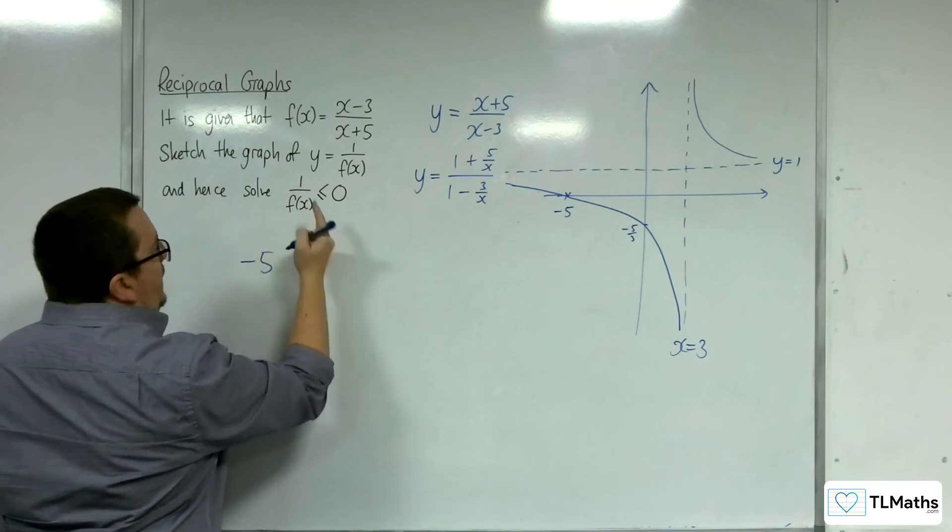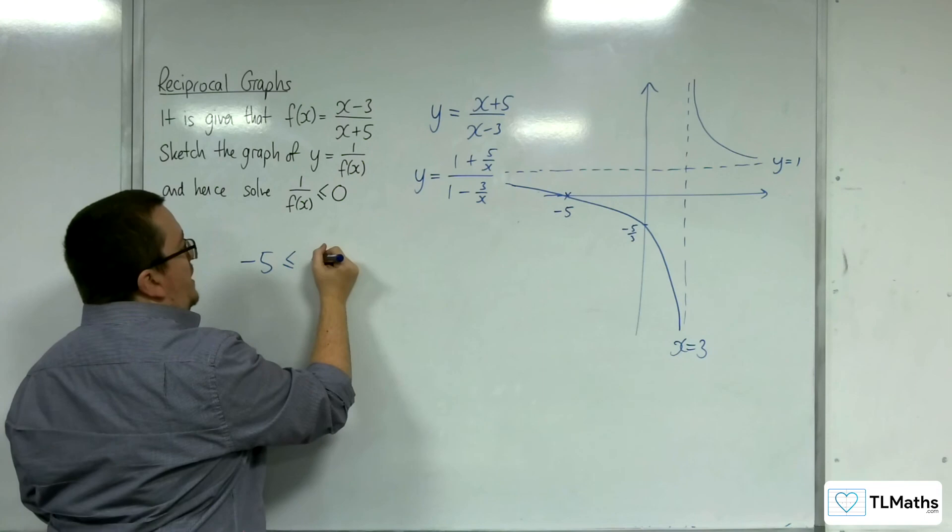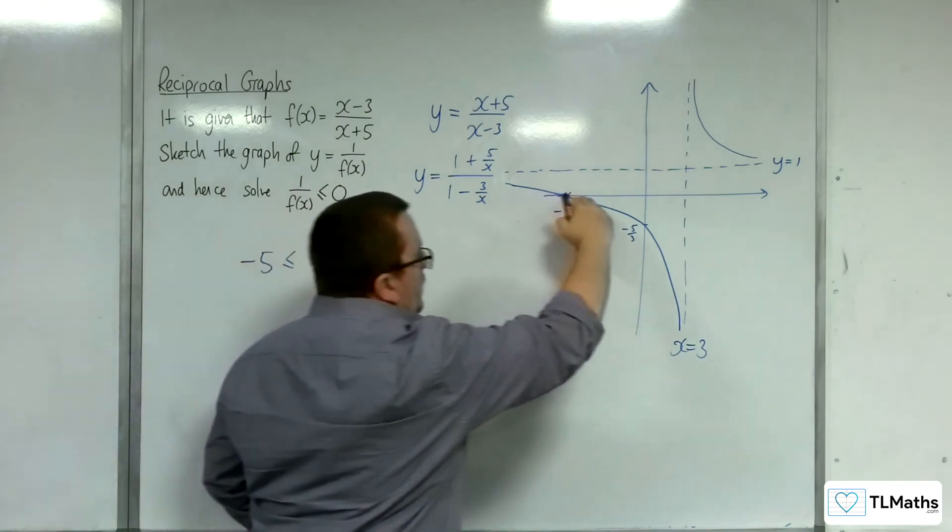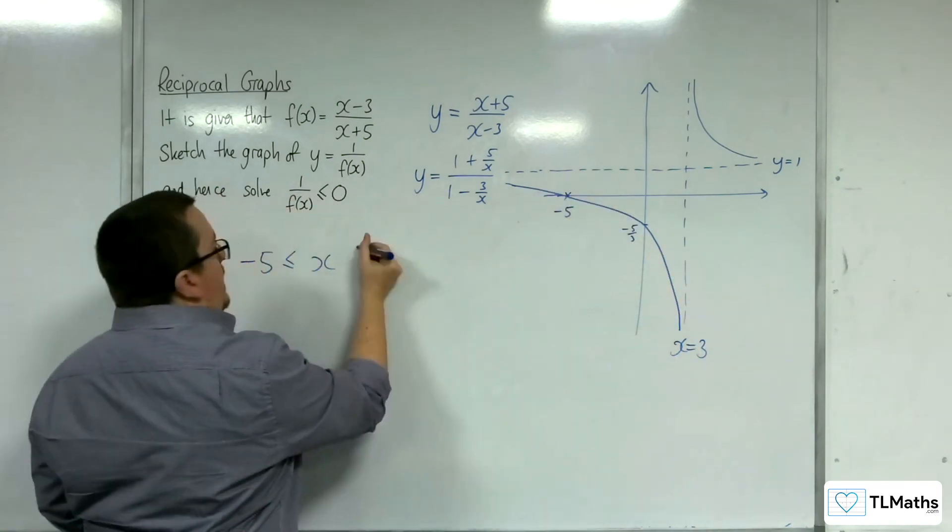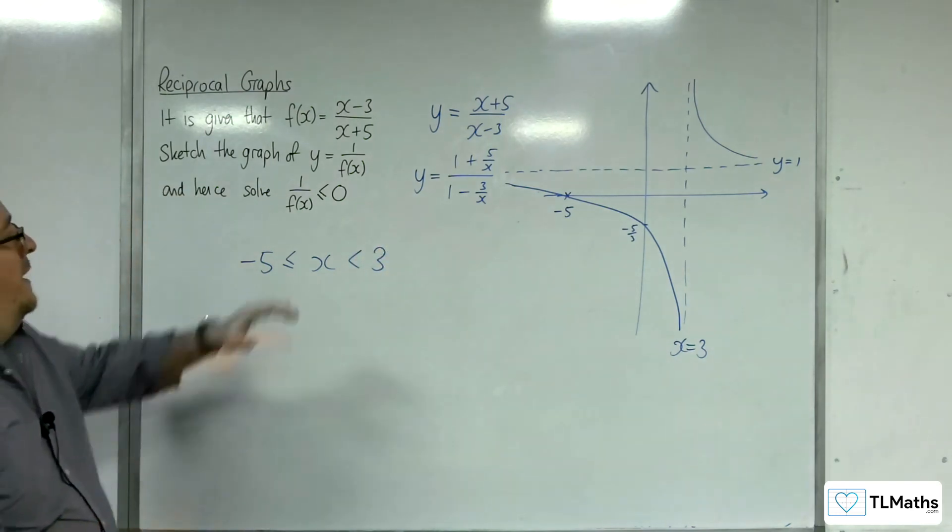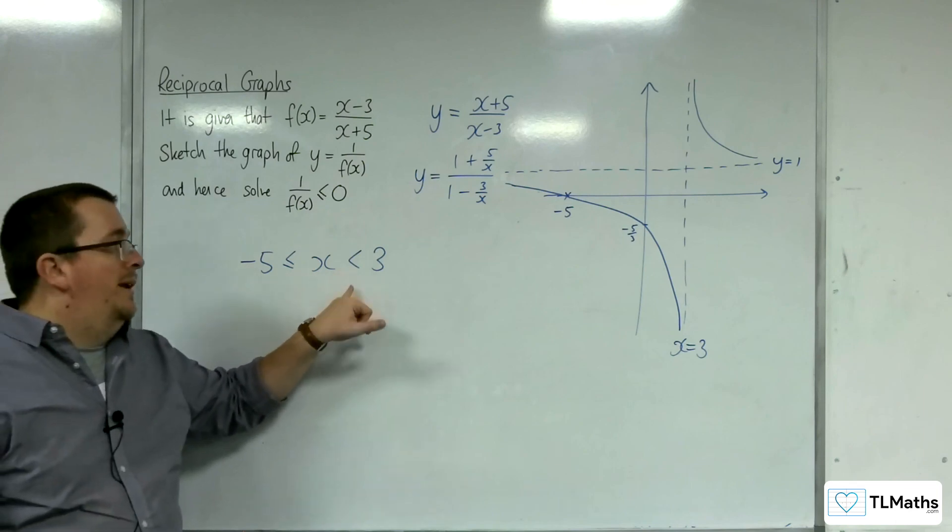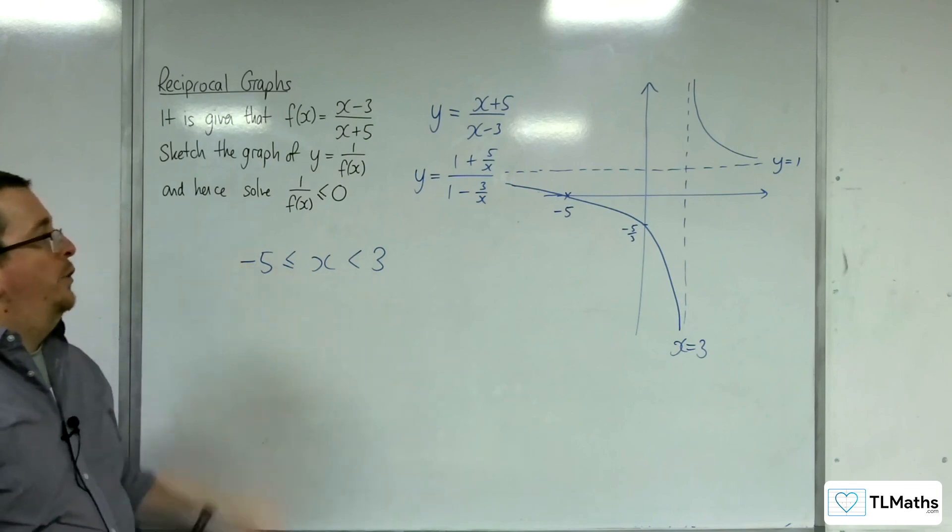So, it is equal to 0 at minus 5. So, we're including minus 5, but not 3. It can't be at 3. So, 1 over f of x is less than or equal to 0 when x is greater than or equal to minus 5, but less than 3. And that solves the problem.